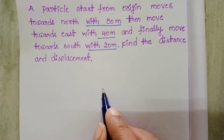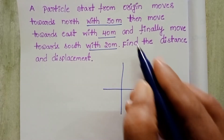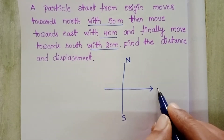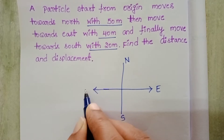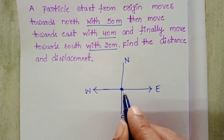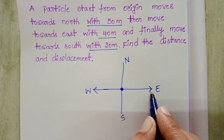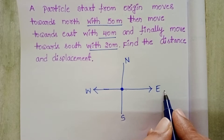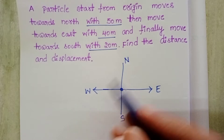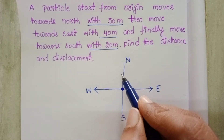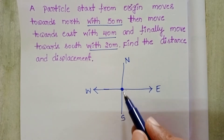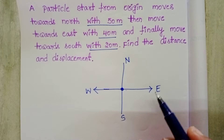On the paper representation, this is the north direction and this one is south. East and west directions are also marked. The particle starts from the origin. Along the positive x-axis, the unit vector is plus i-cap, and along the west direction it is minus i-cap. In the upward direction — positive y-axis — the unit vector is plus j-cap, and along the south direction, the unit vector is minus j-cap.